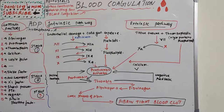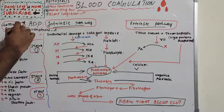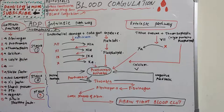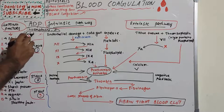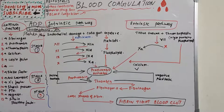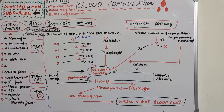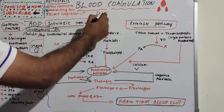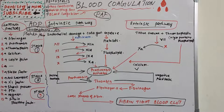In platelet plug formation, once the platelets adhere to the collagen of ruptured blood vessels, there is secretion of adenosine diphosphate and thromboxane A2. These two substances attract more and more platelets and activate them. All these platelets aggregate together and form a loose temporary platelet plug, which closes the ruptured vessel and prevents further blood loss.